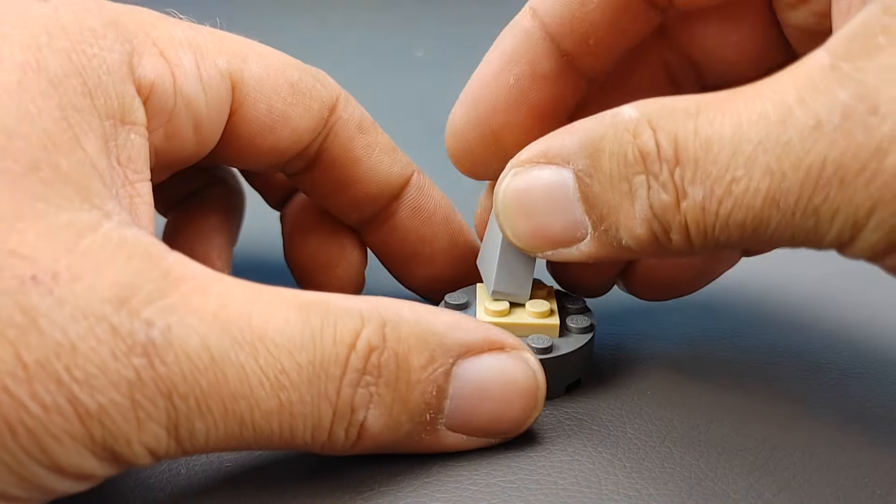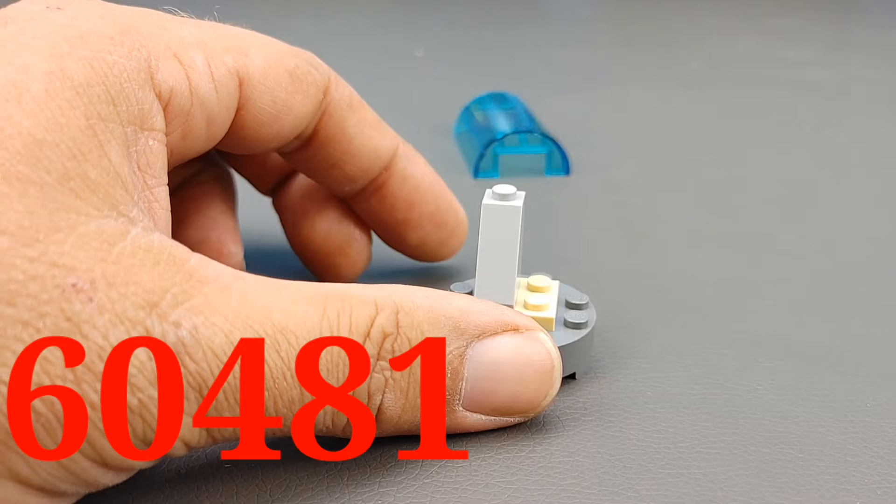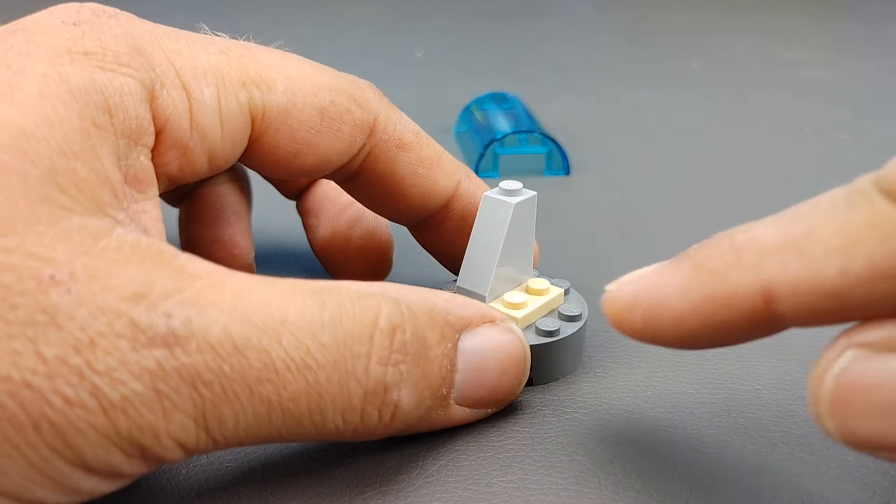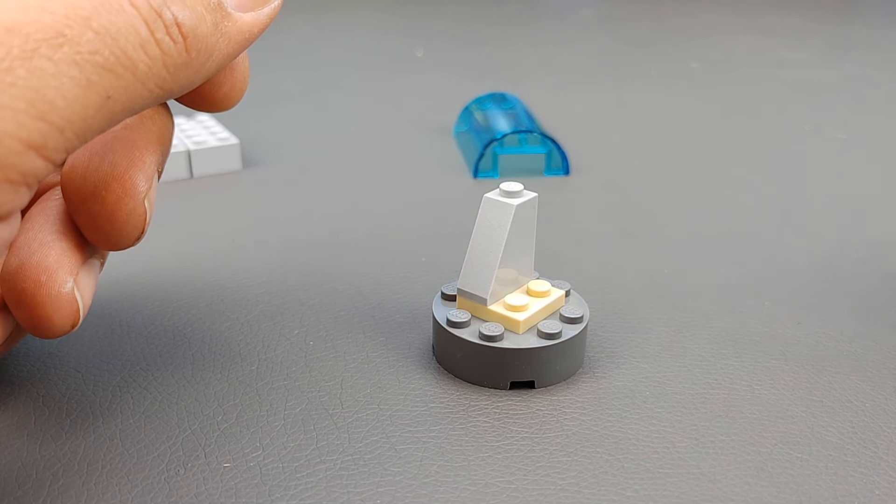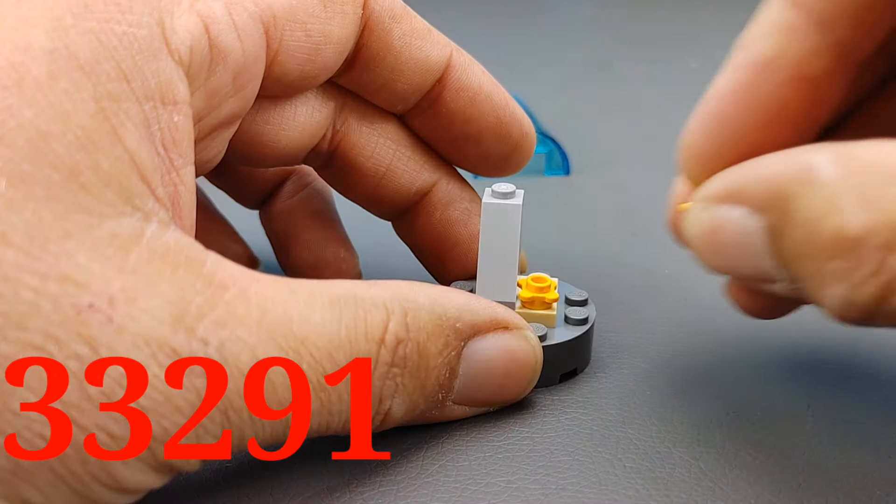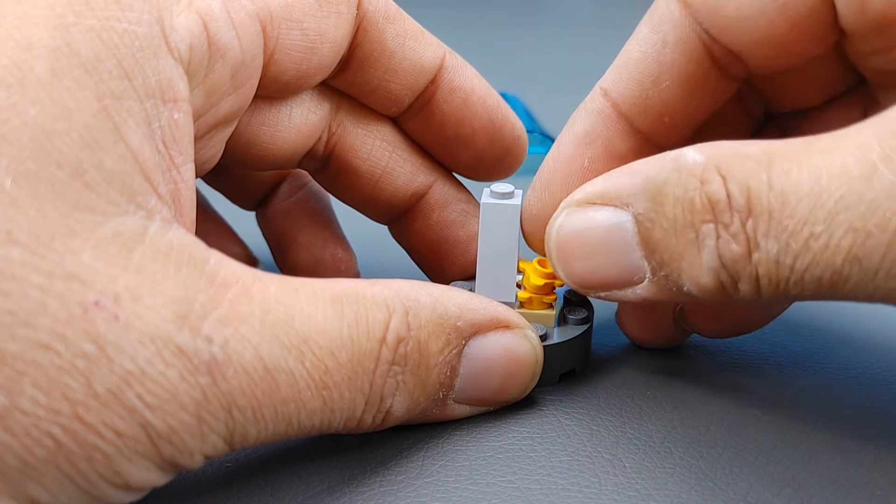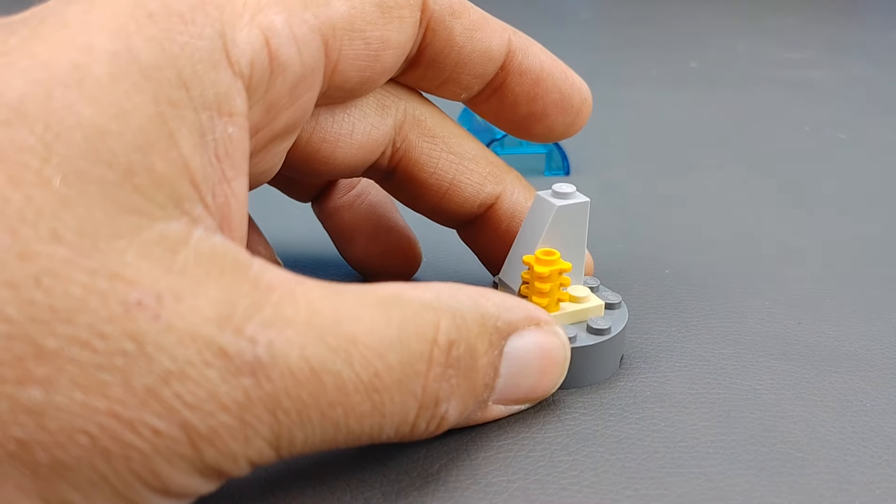And then we're going to take a sloped 1x2x2, at least I believe that's what that's called. And then to give us a little bit of plant life, let's take a couple of these guys. These are just a little yellow flower. And we're just going to quite simply stack them right on top of the other. Give it kind of like a coral look.